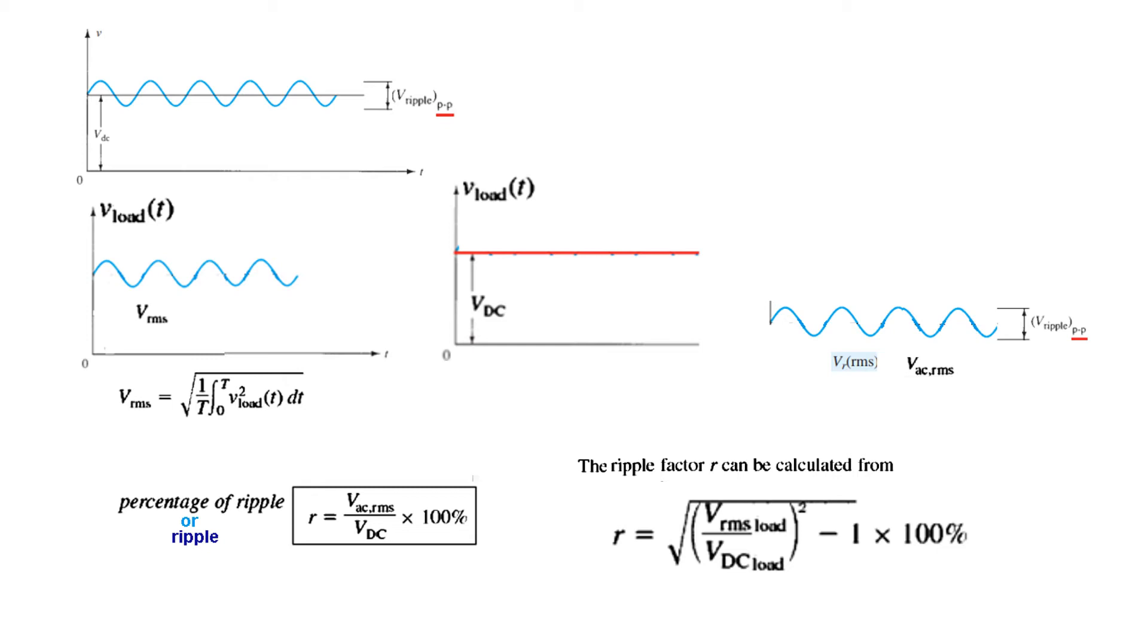And the V_RMS can be calculated from this formula shown here, under root 1 over T average of V square. And similarly, the V_DC has the formula of V average, 1 over T integral 0 to T V load. So we will use these two formulas as well.